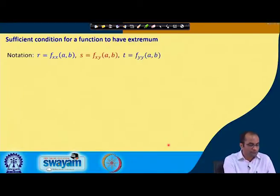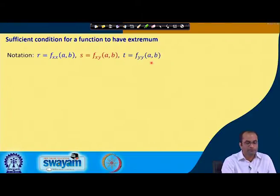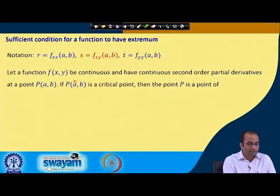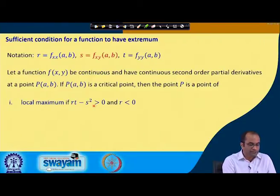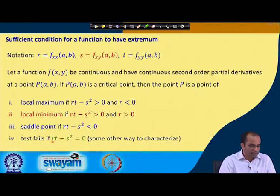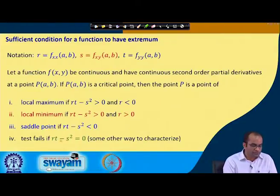Here is the sufficient condition. For simplicity, we use the notation: R = f_xx at (a, b), S = the mixed derivative f_xy at that point, and T = f_yy at (a, b). If f has continuous second order partial derivatives and (a, b) is a critical point, then: the point is a local maximum if RT - S² > 0 and R < 0; a local minimum if RT - S² > 0 and R > 0; a saddle point if RT - S² < 0; and the test fails if RT - S² = 0.